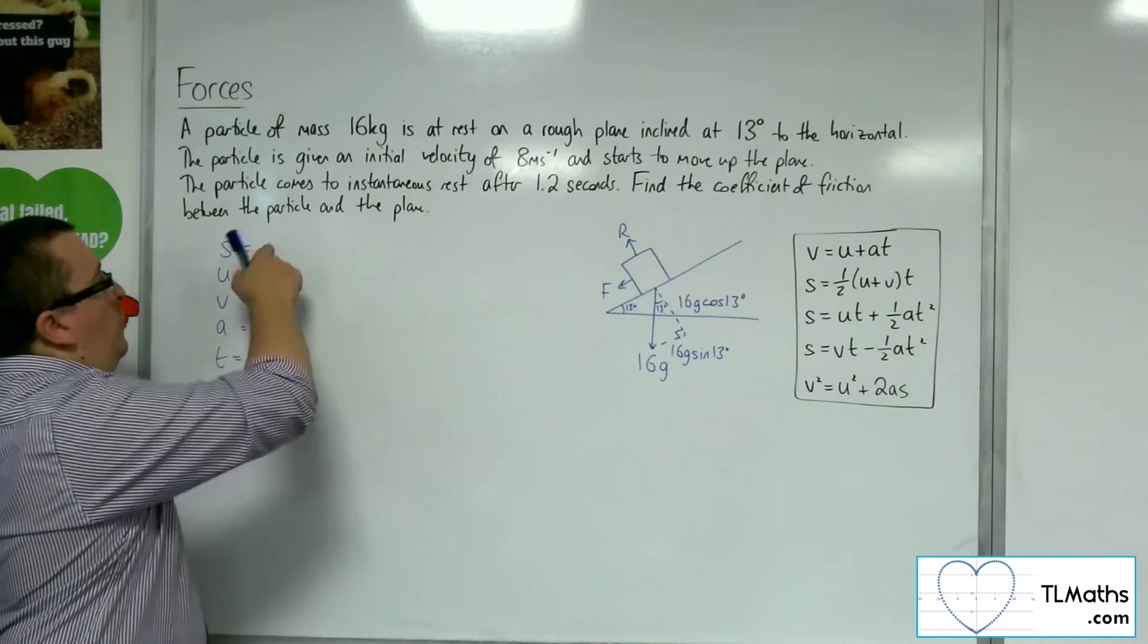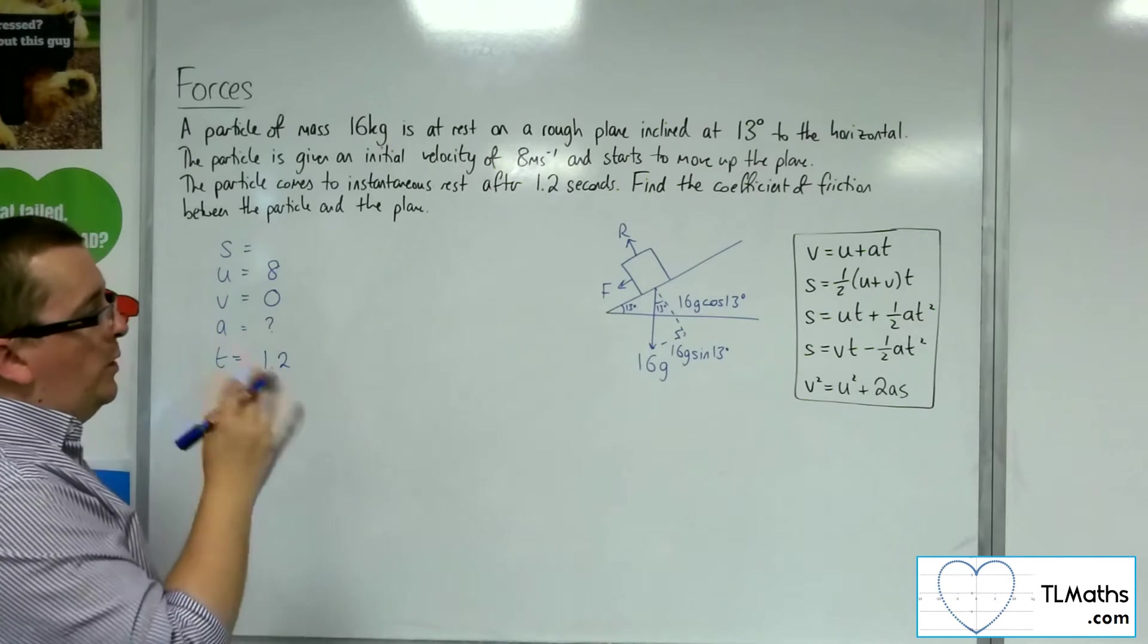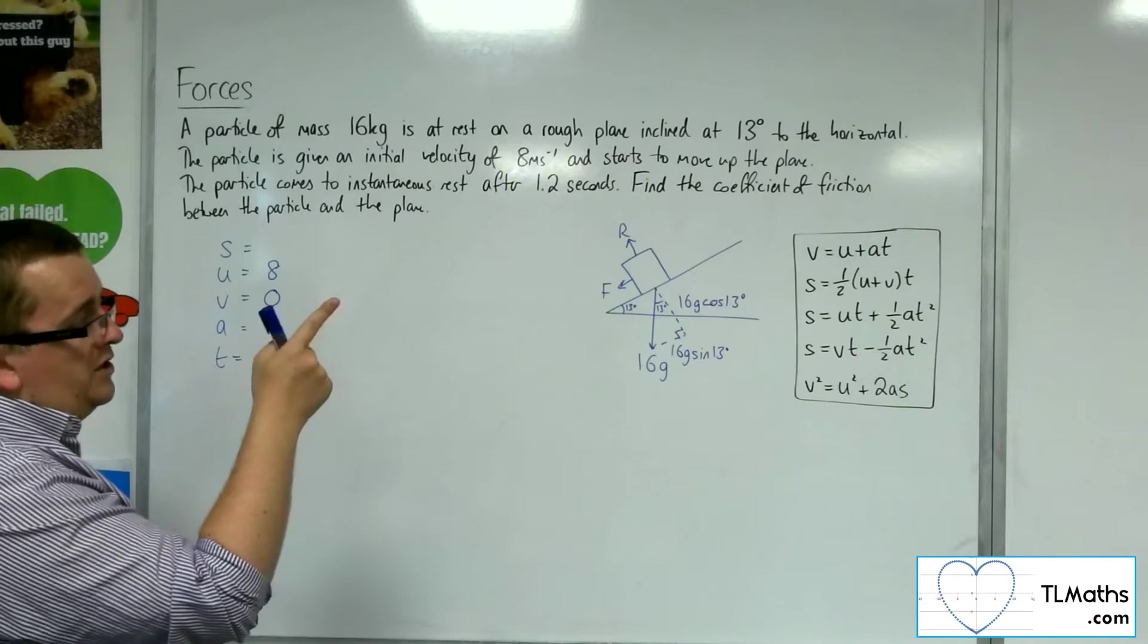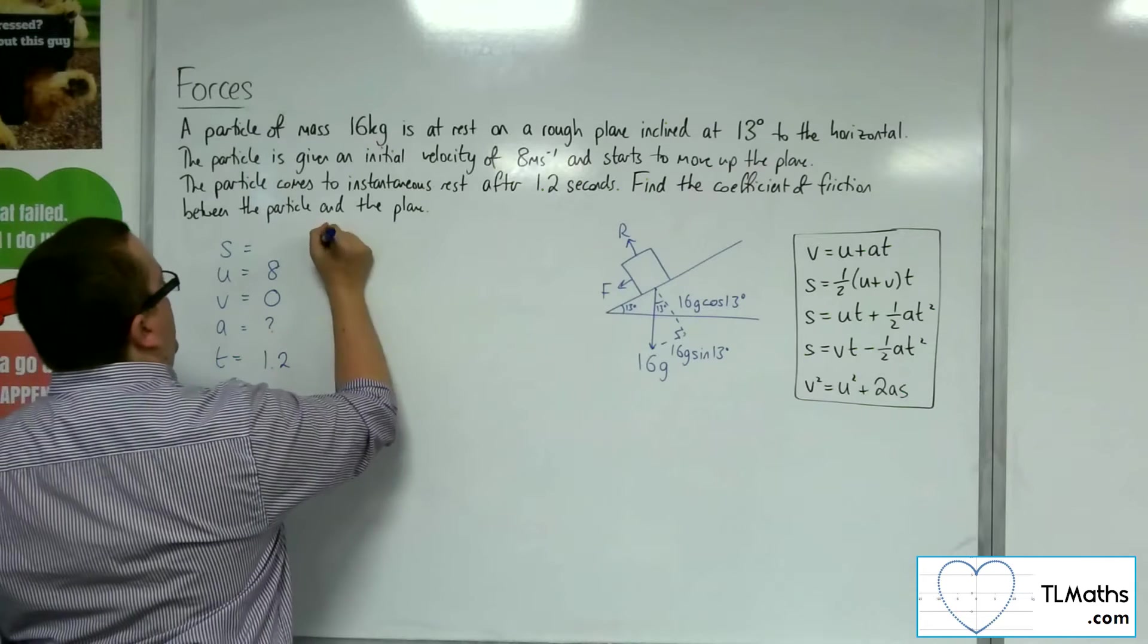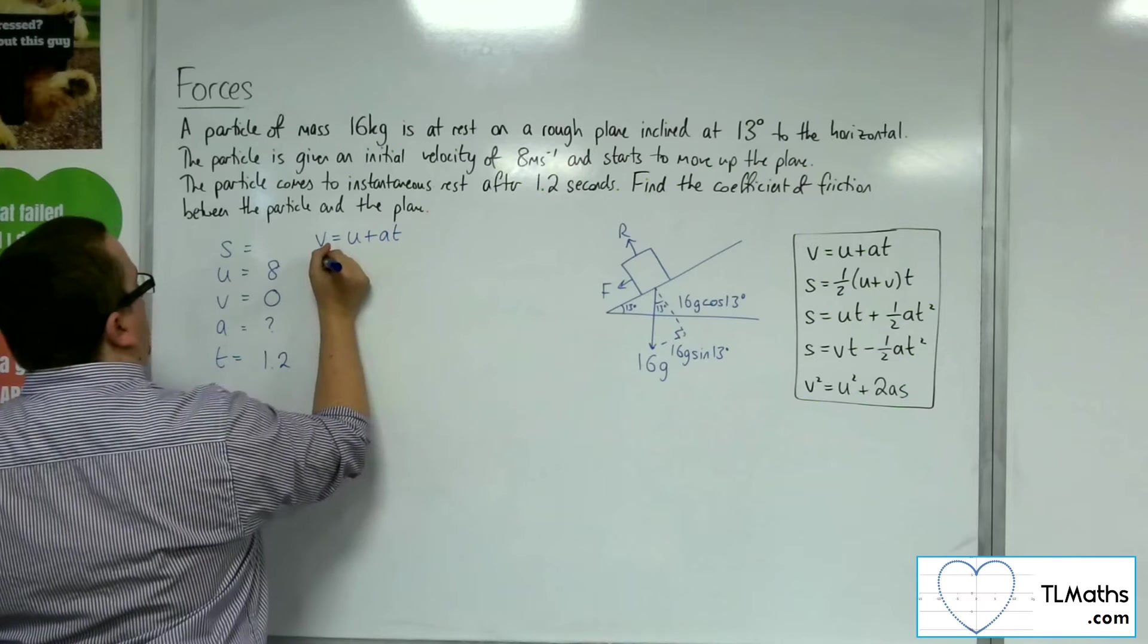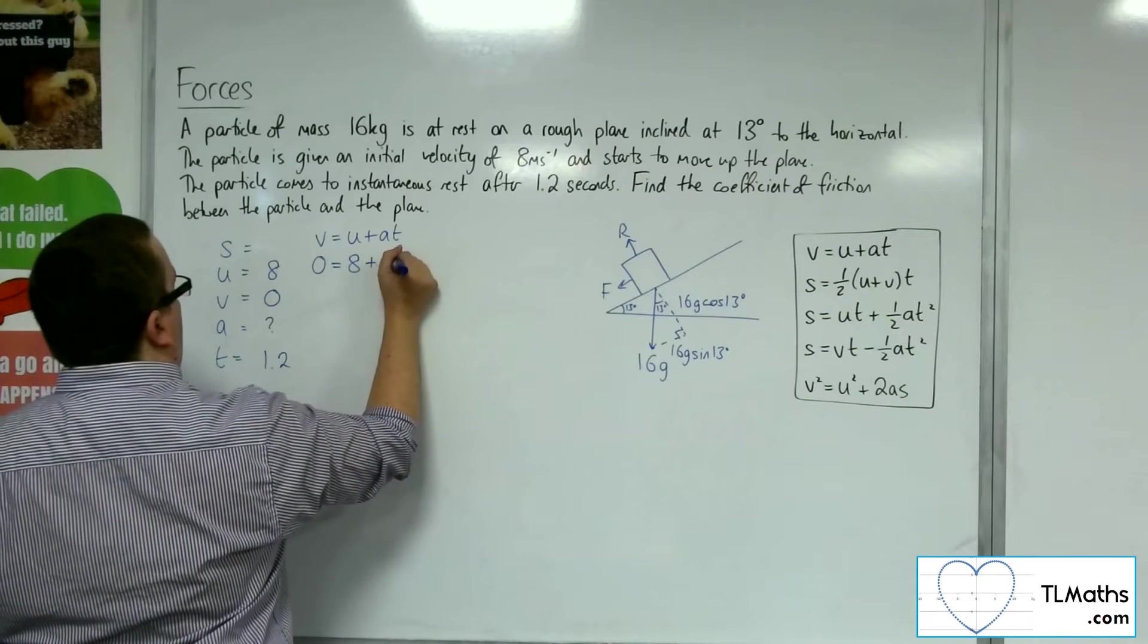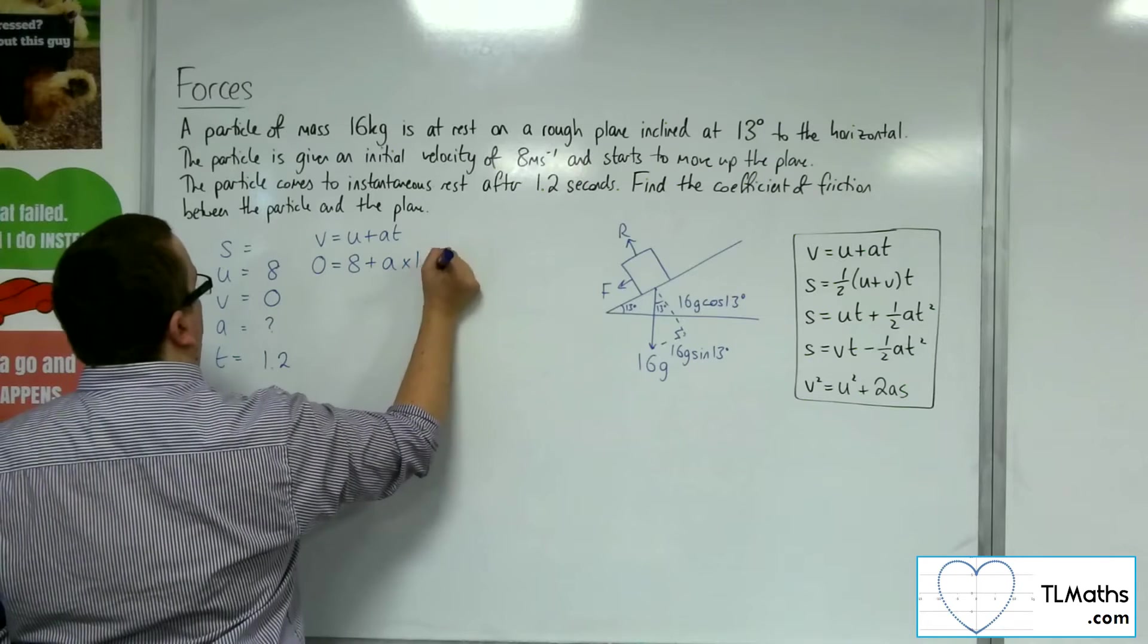I'm not so interested in S, I need the acceleration. So I want the equation that doesn't have S, which is the top one. V equals U plus AT. So 0 is equal to 8 plus A times 1.2.